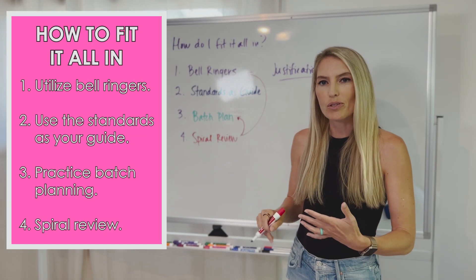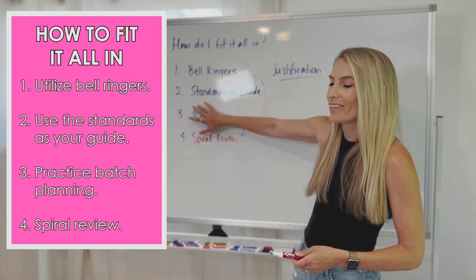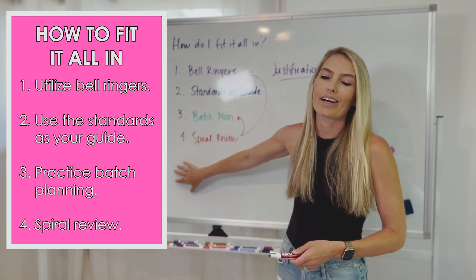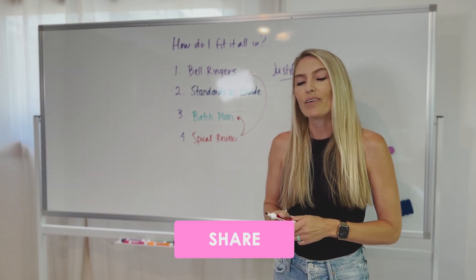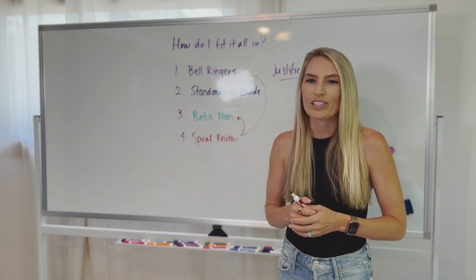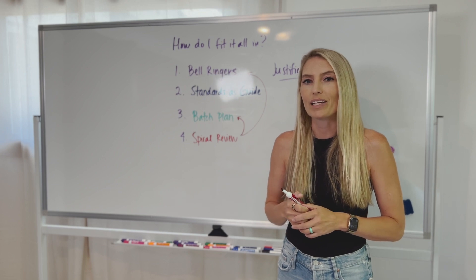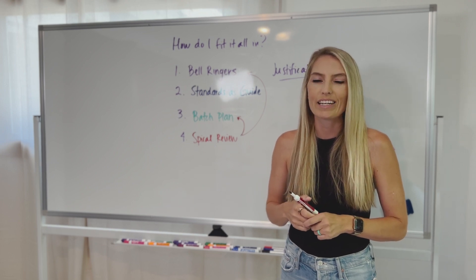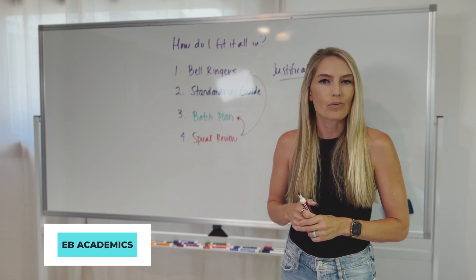So hopefully this helps you. Those are the four ways to fit it all in. We talk about bell ringers, using the standards as your guide, batch planning and spiral review. So hopefully this helps you. If it does, please share with a colleague. We would love to kind of spread the message of our belief here at EB and how we can support teachers. And one of those biggest pain points that you guys have is how do we fit all of the standards that we need to cover in our ELA class periods. All right, make sure that you hit subscribe where you're watching this video and we will see you next week on the channel.